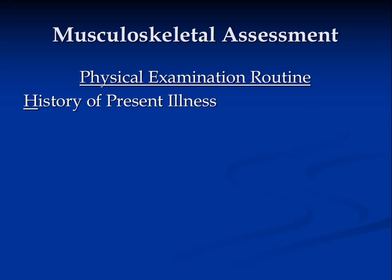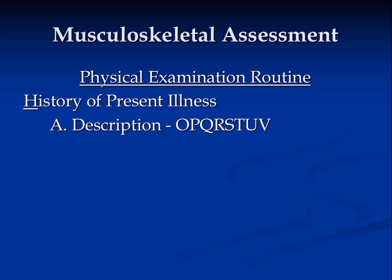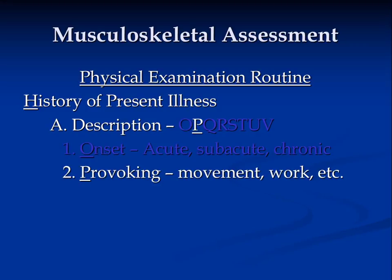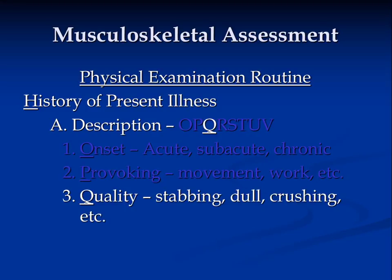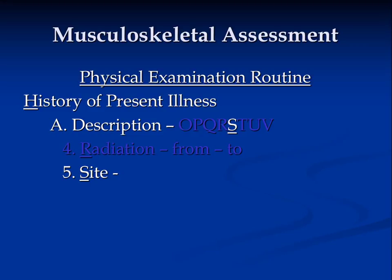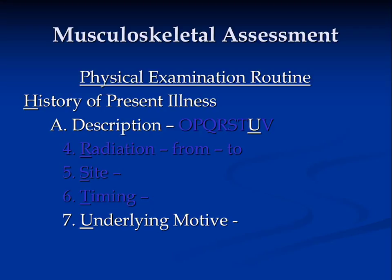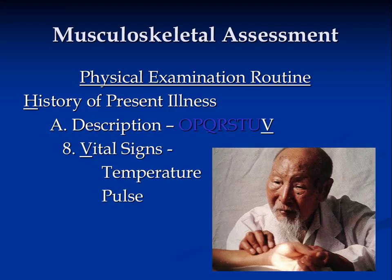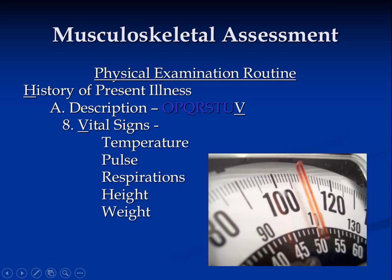Our physical exam routine will begin with the mnemonic HIPPERONE — History of Present Illness. We will use the OPQRSTUV model: Onset (was it acute, subacute, or chronic?), Provoking factors (what makes the pain better or worse?), Quality of pain (stabbing, dull, crushing, burning?), Radiation (does the pain radiate?), Specific site of the pain, Timing (is it worse in the morning or at night?), Underlying motive, and Vital signs — temperature, pulse, respiration, height, weight, and blood pressure.